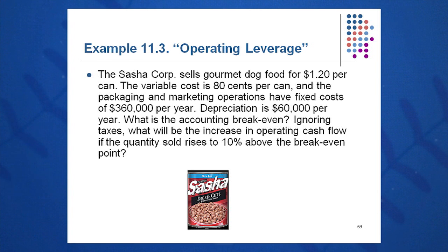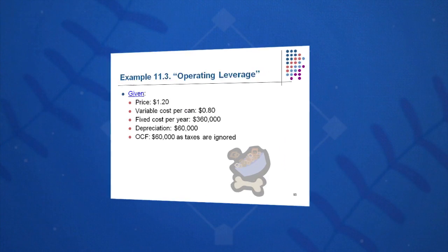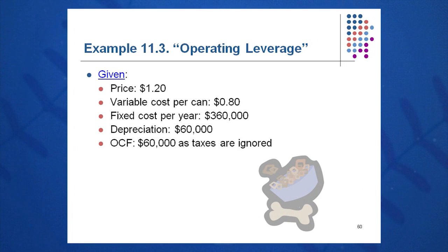Here's a sample. Sasha Corporation sells gourmet dog food at $1.20 a can. The variable cost is 80 cents per can, so our contribution margin is 40 cents. Packaging and marketing have fixed costs of $360,000 per year. Depreciation is $60,000 per year. We need to find the accounting break-even, and the increase in OCF if we sell 10% more above break-even. The price per can is $1.20, variable cost is 80 cents, fixed cost per year is $360,000, depreciation is $60,000, and OCF is $60,000. Taxes are ignored.